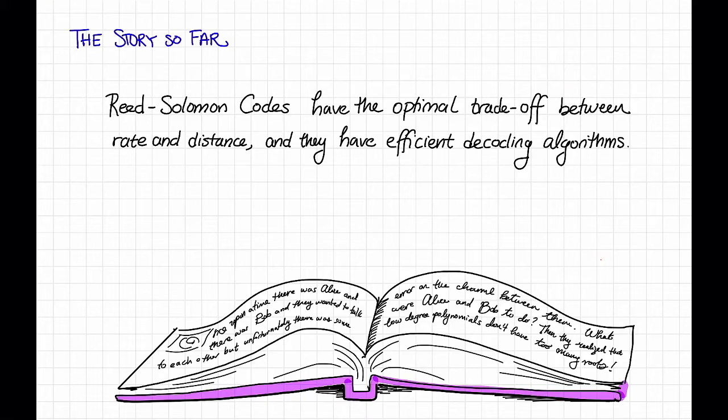And we also saw that Reed-Solomon codes have the optimal trade-off between rate and distance. They meet the singleton bound. Moreover, we saw that they have efficient encoding and decoding algorithms.